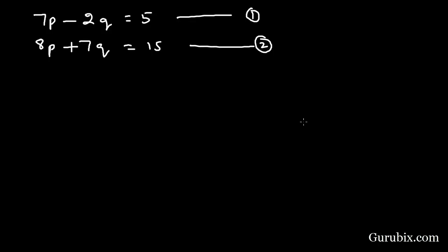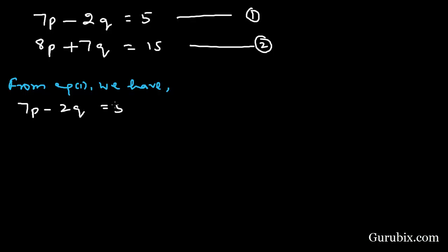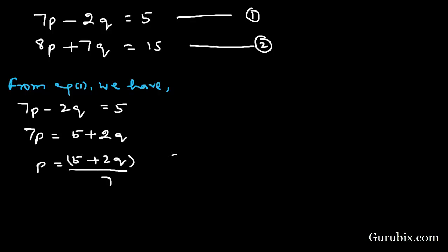Starting with equation number 1: 7p minus 2q equals 5. We write the value of p in terms of q. So 7p equals 5 plus 2q, which gives p equals 5 plus 2q over 7.